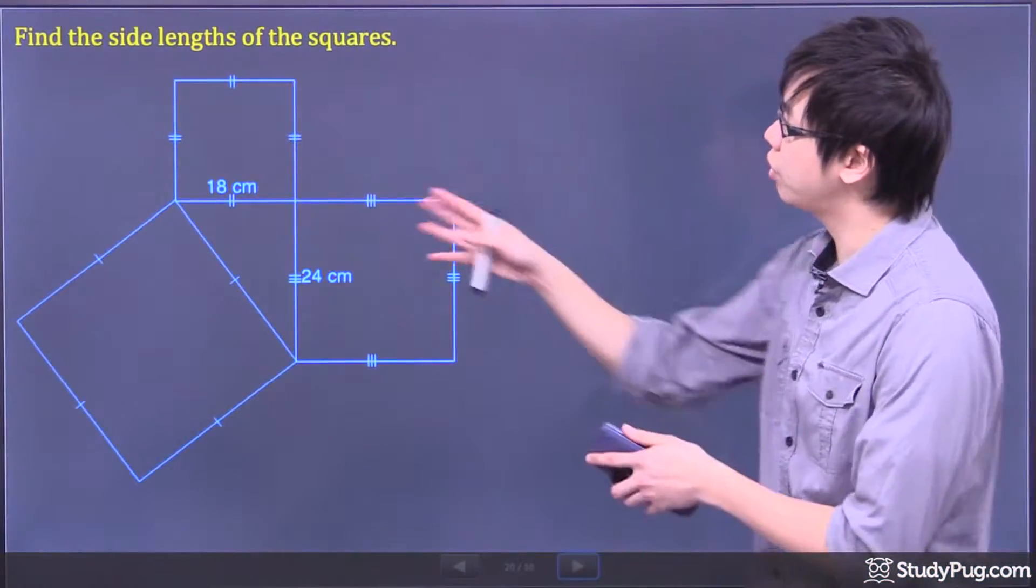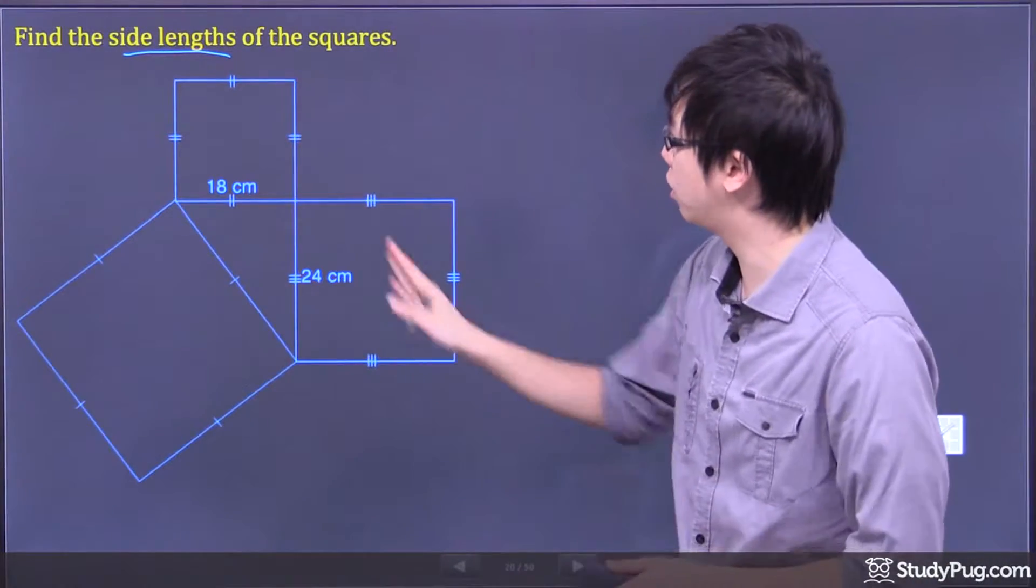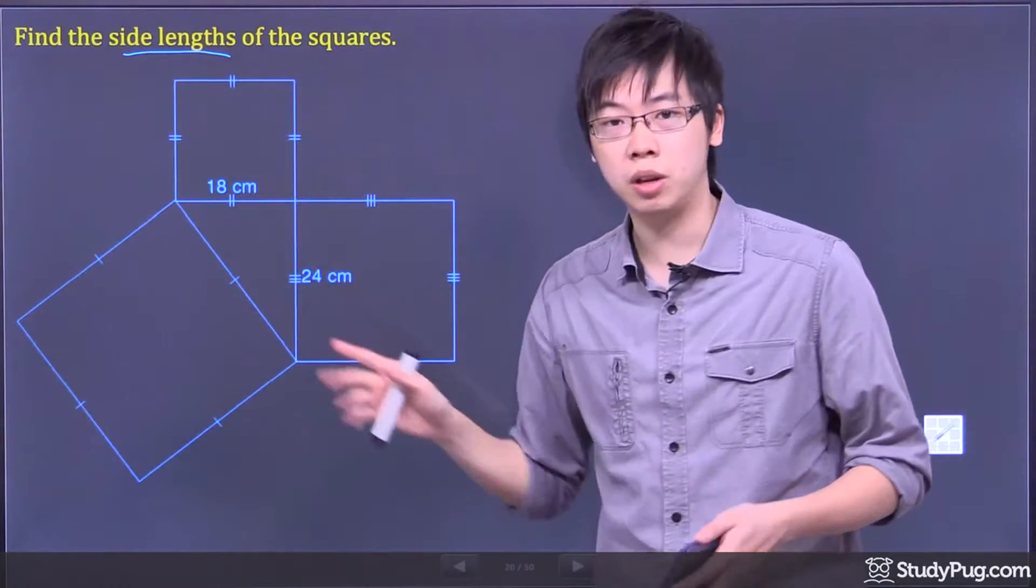Hi, welcome to this question right here. So we're trying to find the side length of the squares. As you can see we get one, two, three different squares right here with a right triangle in the middle.